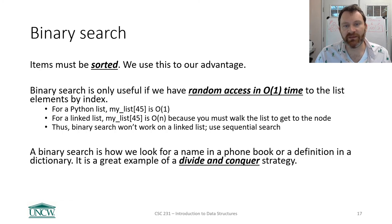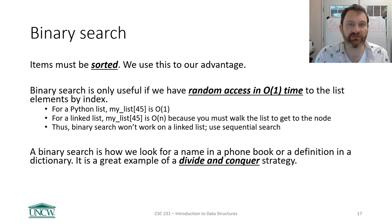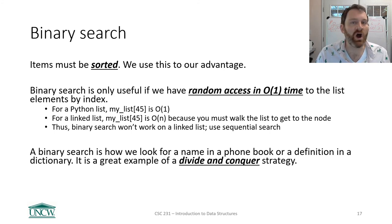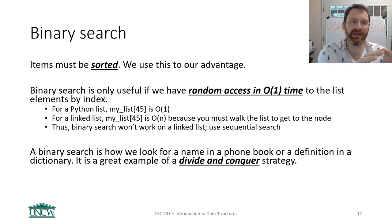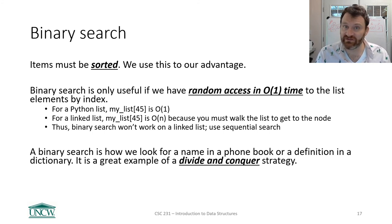Binary search is only useful if we have random access in big O of one time. For an array-based list, you can access any element by its index in big O of one time because of array-based arithmetic. For a linked list, you cannot randomly access an element in big O of one time — it's big O of n because you have to start at the head and walk down. So binary search only works in an array context; for a linked list, you're stuck using sequential search.